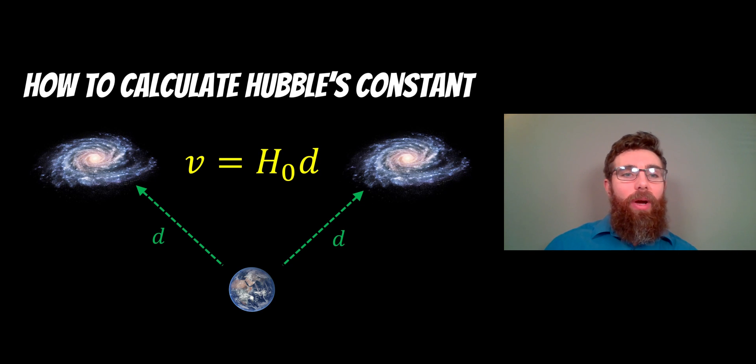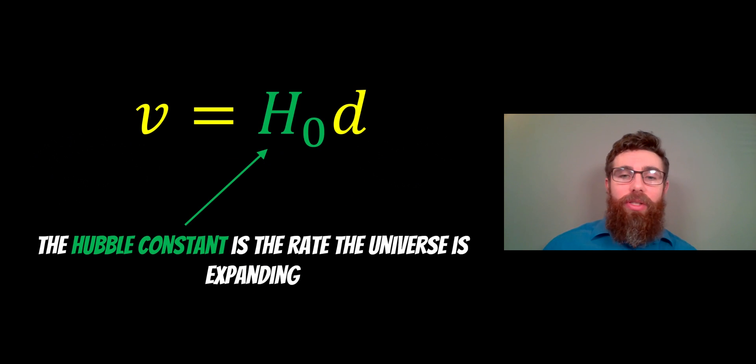Welcome to this video about how to calculate Hubble's constant. First, what is the Hubble constant? Here we've got an equation which is v equals H₀ times d. The H₀ here is the Hubble constant, and this is the rate the universe is expanding at. So it's the expansion rate of the universe, which is our Hubble constant.